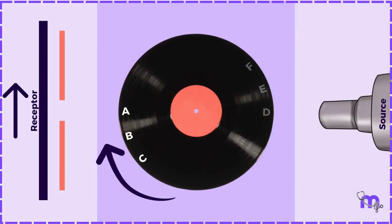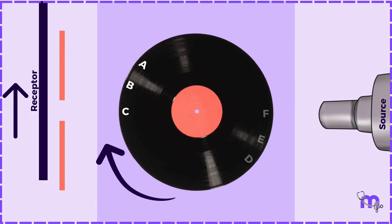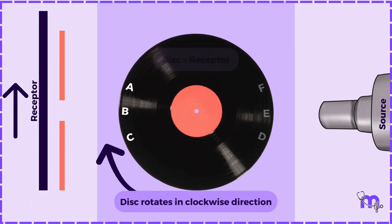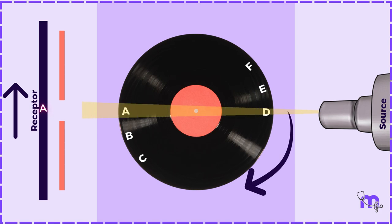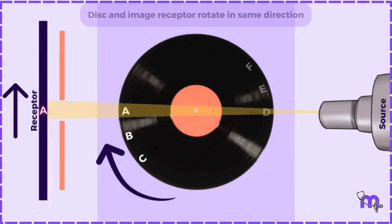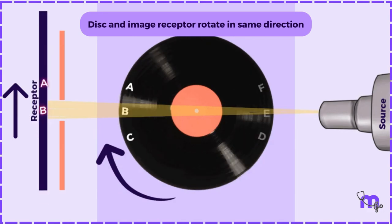Therefore, to solve this problem, let us move the image receptor linearly in the same direction and same speed as the rotating disc, keeping the collimator and the X-ray source steady. Now the disc moves in a clockwise direction and the receptor also moves in the same direction and at the same rate as the disc. X-rays pass through the center of rotation and get attenuated at object A to form the image at a point on the receptor. Similarly, the image of object B forms at another point on the film receptor. Because the disc rotates in the same direction as the image receptor, all the images are sharp and clear without overlaps.